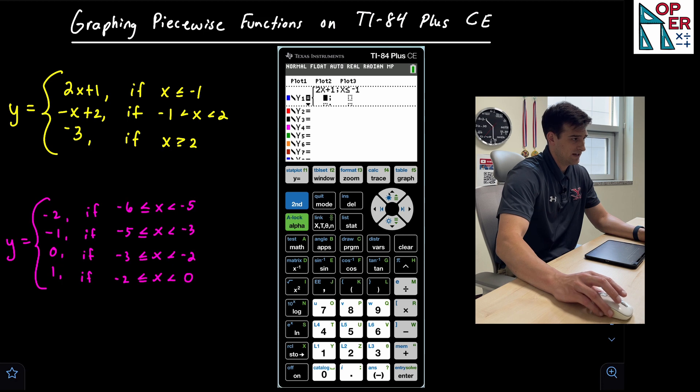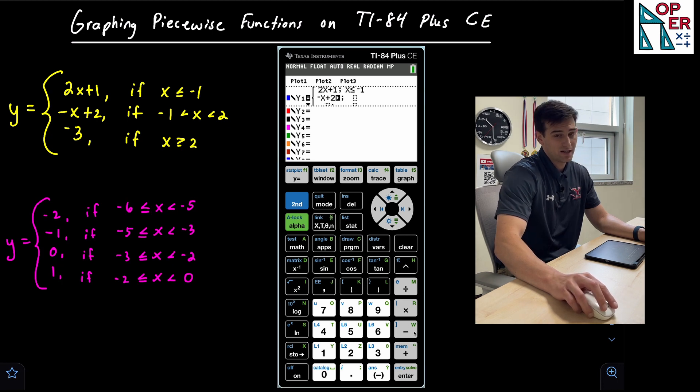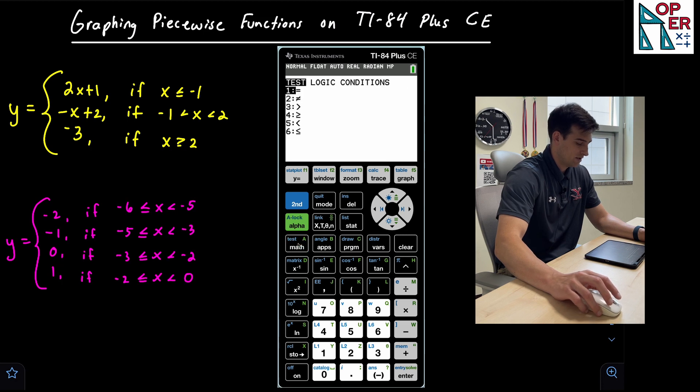So I'm gonna go down. I'm gonna go left to get over to my second piece. And this one is negative X plus two. Remember the negative button is down here at the bottom. This button over here on the side is subtraction. Don't get those mixed up. Now we're gonna use our domain of negative one. And then we're gonna go back to second math to get our inequality symbol.